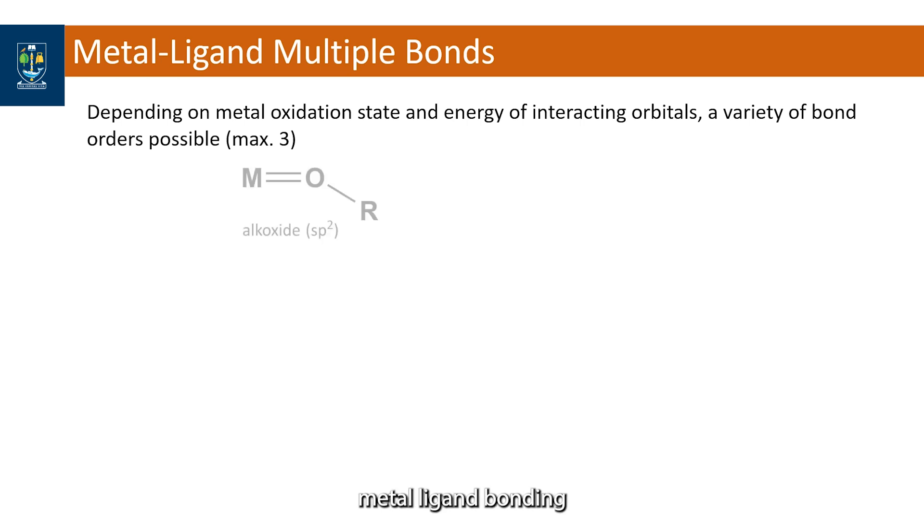If we consider metal ligand bonding in the context of hybridized orbitals, then a double bond is produced by an sp2 hybridized oxygen atom of an alkoxide. A triple bond will be produced if that oxygen atom is sp hybridized.